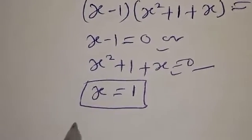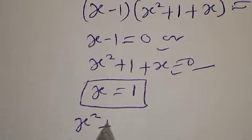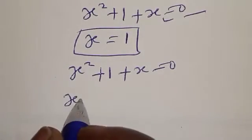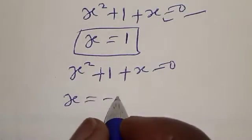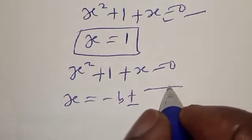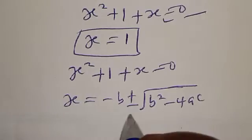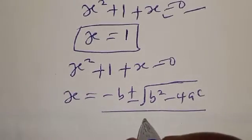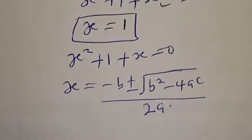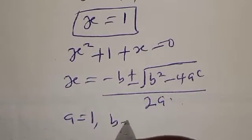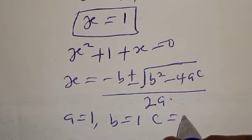We have s² plus s plus 1 equal to 0. The quadratic general formula is s equals minus b plus or minus square root of b² minus 4ac, all over 2a. From the equation, we identify a equal to 1, b equal to 1, and c equal to 1.